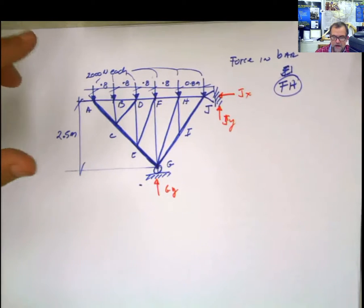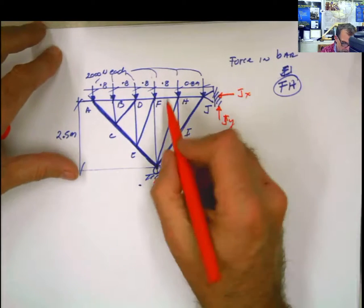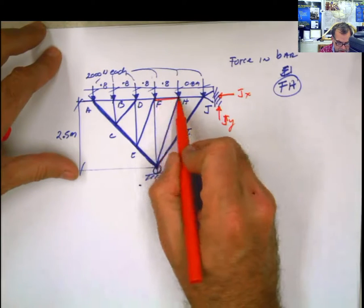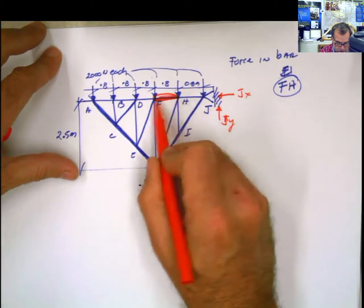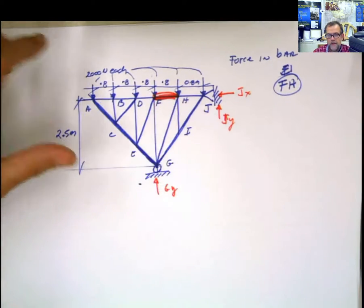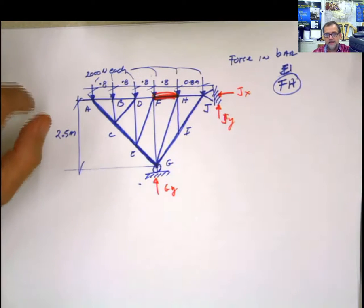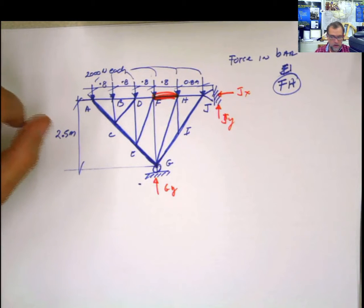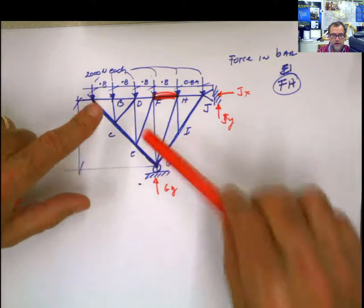The first thing that I recommend you to do is go here and identify that bar. This is the bar that we are talking about, this one. Most definitely, the problem is telling you to calculate one bar, and it's one of the interior bars.